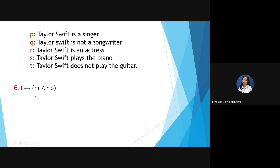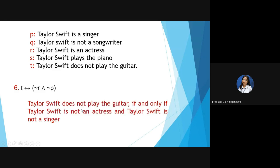Number 6: T ↔ (NOT R ∧ NOT P). Answer: 'Taylor Swift does not play the guitar if and only if Taylor Swift is not an actress and Taylor Swift is not a singer.' Note that R and P are grouped together. We added NOT to both R and P to form their negations.